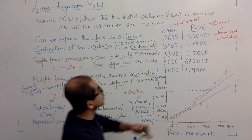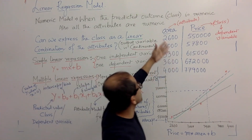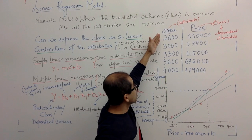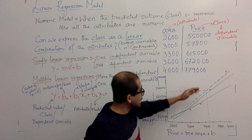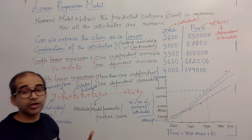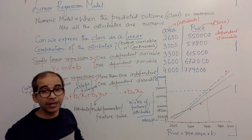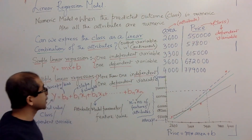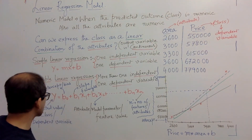The price is called the class, or the final predicted variable, or the dependent variable — it is dependent on the attribute like the area. Here we have shown one independent variable, also called an attribute or feature. There are different names. Linear regression is of two types: simple linear regression, where you have just one independent variable and one dependent variable. The equation will be y = mx + b.